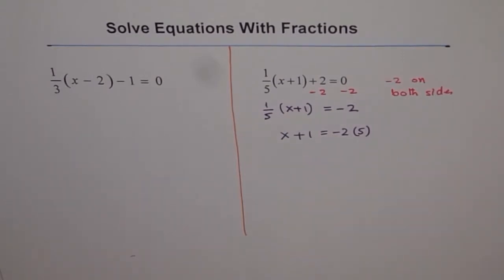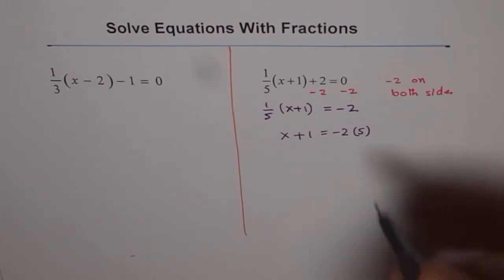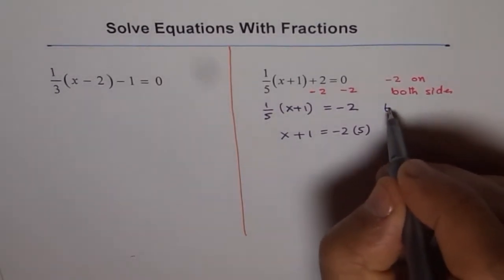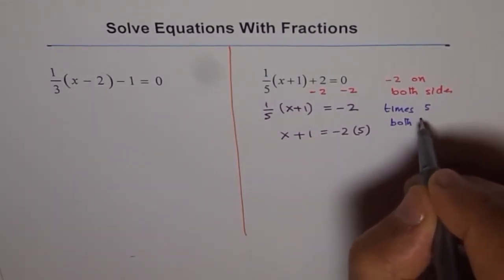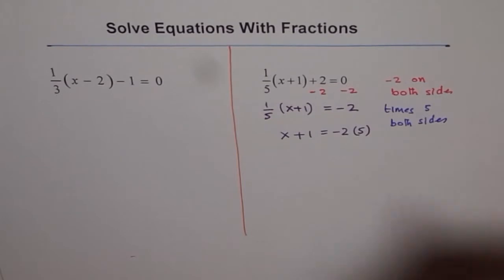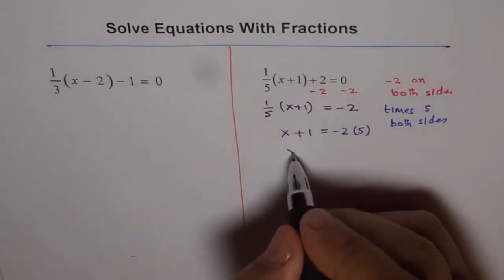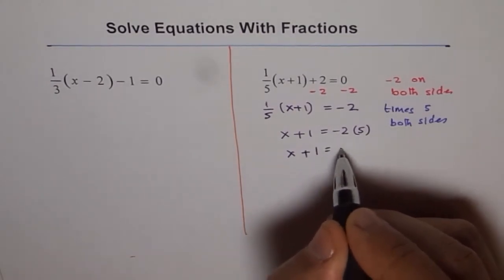So at this step, what we really did was times 5 both sides. So both sides we did times 5. So we got x plus 1 equals to minus 10.